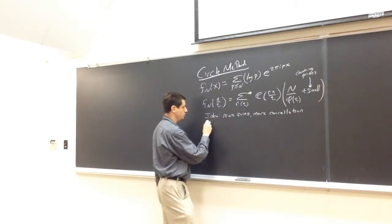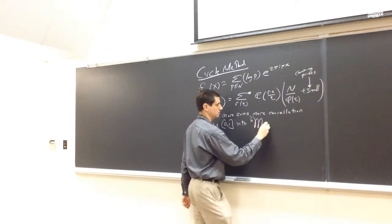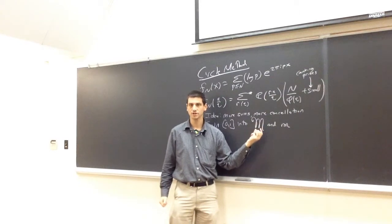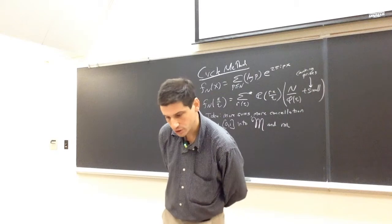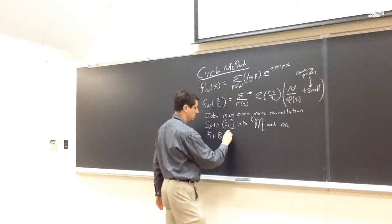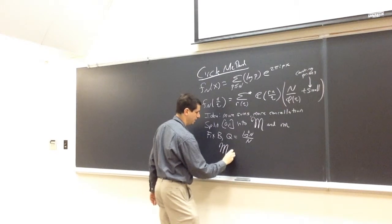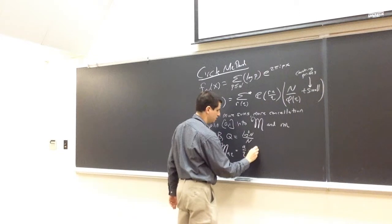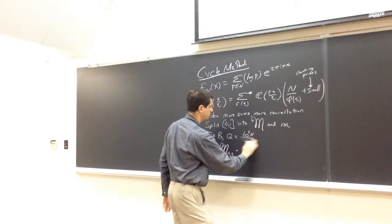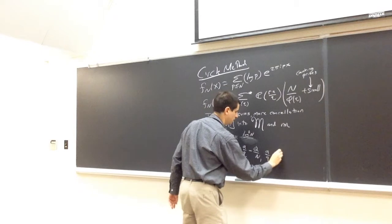So the idea is to split [0,1] into the major arcs and the minor arcs. The major arcs are the places where the function is large; the minor arcs are the places where the function is small. Fix b, and let Q = (log n)^b. Then M_{a,q} = [a/q − Q/n, a/q + Q/n].